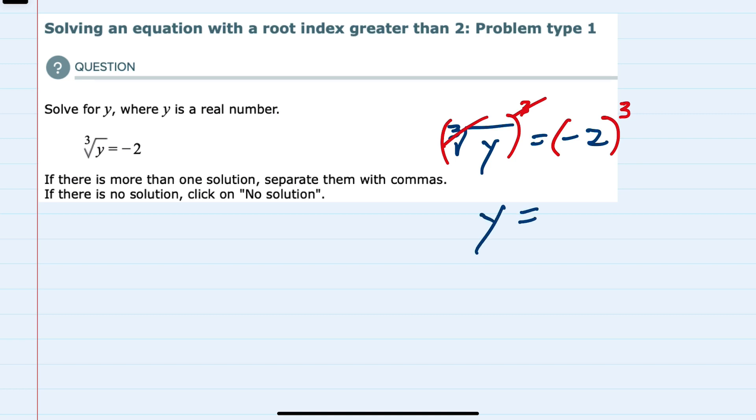And on the right-hand side I have a negative 2 cubed, so negative 2 times negative 2 times negative 2 would leave me with a negative 8.